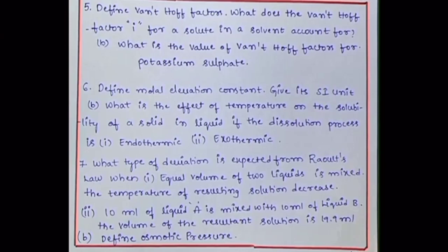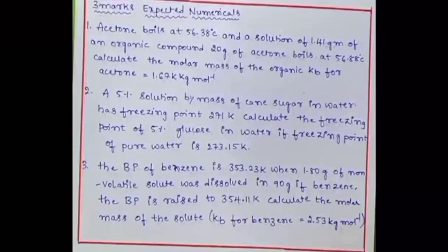What type of deviation is expected from Raoult's law when equal volumes of two liquids are mixed and the temperature of resulting solution decreases? When 10 ml of liquid A is mixed with 10 ml of liquid B, the volume of the resultant solution is 19.9 ml. Define osmotic pressure. Next, 3 marks expected numericals: